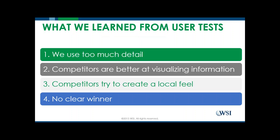From this testing, here's what we learned. Our competitors communicated a lot more with a lot less information — we were too detailed. Our competitors did a much better job at visualizing the information they were communicating, which made it easier to consume. Our competitors tried to create a local feel even though they're not local. Lawn Doctor and TruGreen would use reverse IP lookup to show a local phone number, giving a false impression that they're a local company. We noticed that our test subjects not only saw through that, but it was a bit of a turn-off for them.